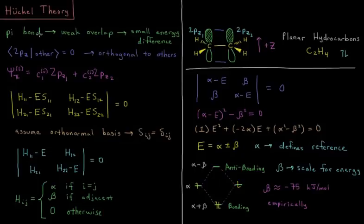The pi bond is generally a weaker overlap than a sigma bond because it's side-on rather than head-on overlap. We have a smaller energy difference, so pi bonds are typically weaker and less of a deviation in energy away from the molecules not being bonded than sigma bonds would be. They are orthogonal to all of the other orbitals in the molecule.